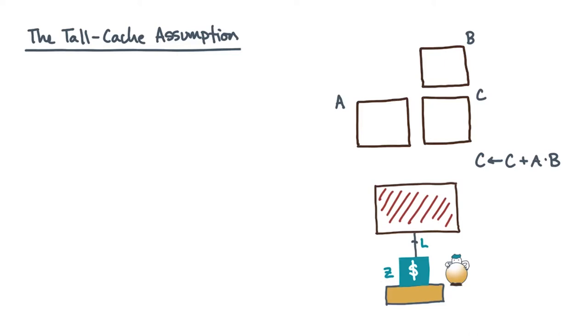Consider the problem of the matrix matrix multiply operation, c gets c plus a times b. Suppose you run this operation on an ideal cache machine.